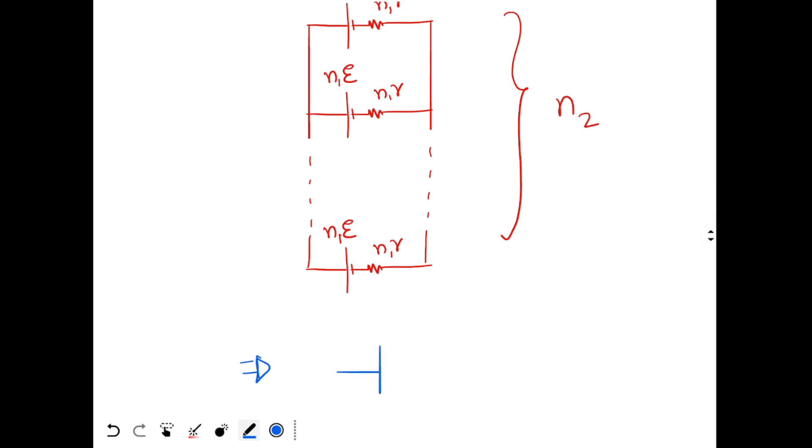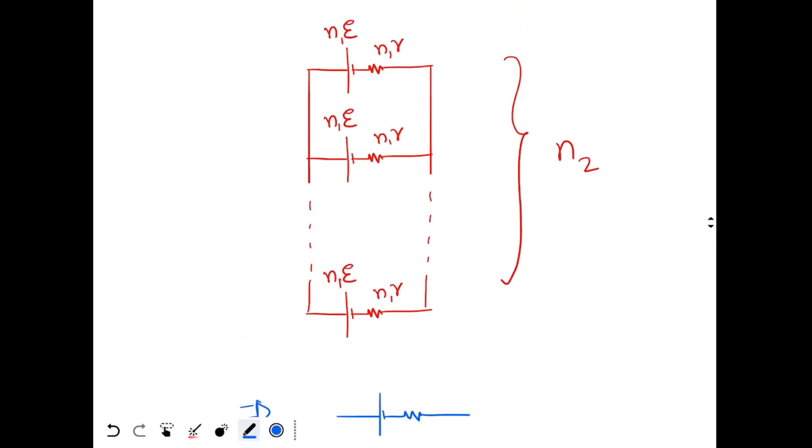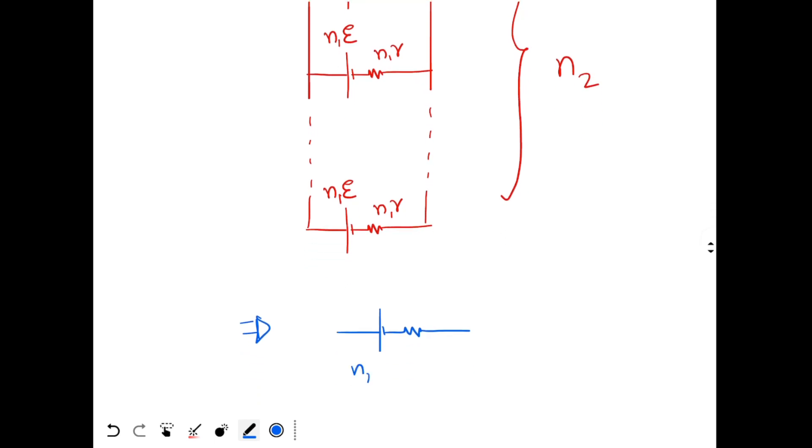What should be the EMF of that battery? So there is a formula for parallel combination. I am not going into the formula. You can look it up anywhere. The formula gives me that the net EMF over here will be N1E, while the resistance will be N1r by N2. N1E is the EMF. N1r by N2 is the resistance.